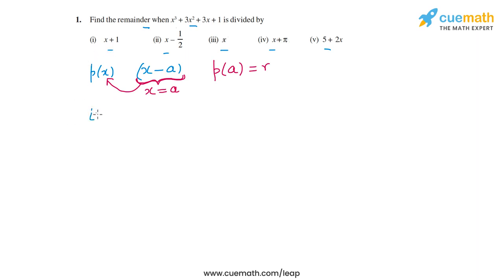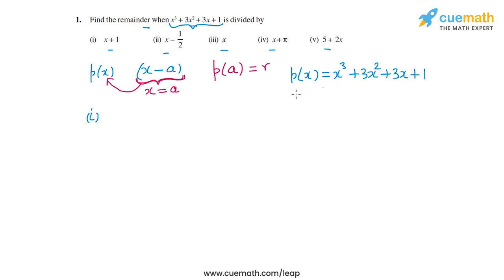For the first part, I'll call this polynomial p(x). So p(x) = x³ + 3x² + 3x + 1. When p(x) is divided by (x + 1), the zero of (x + 1) is x = -1.